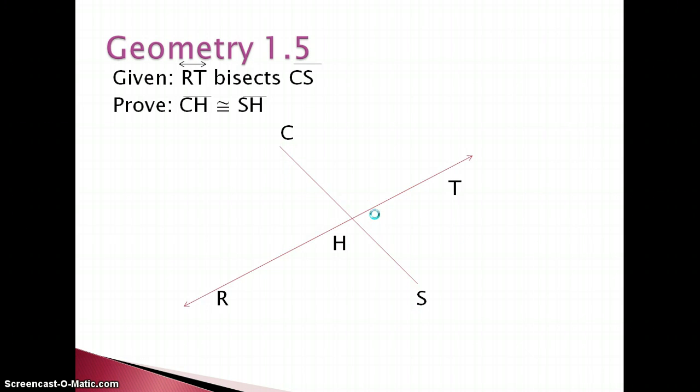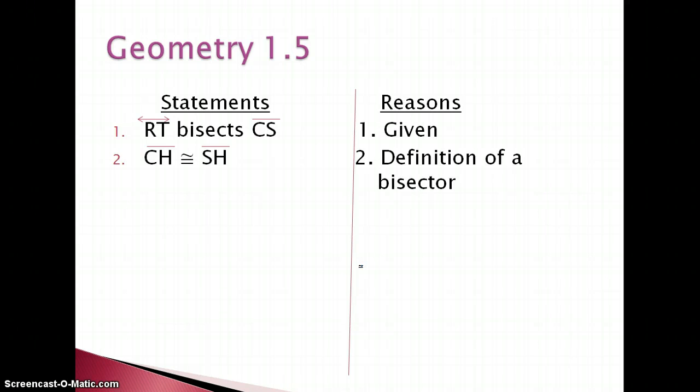Given RT bisects CS, prove that CH is congruent to SH. Well, you know a bisector cuts a segment into two congruent pieces, so really this proof: you have our given statement, line RT bisects CS, that's given. And by the definition of a bisector, CH is going to have to be congruent to SH just because that's exactly what a bisector does. It cuts a segment into two congruent pieces, so that proof is done nice and easy.